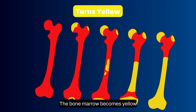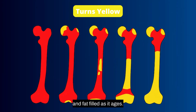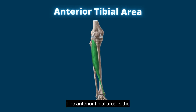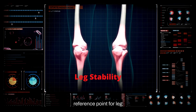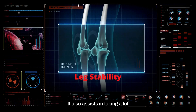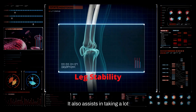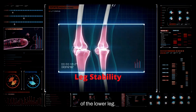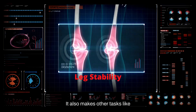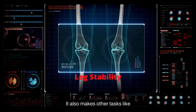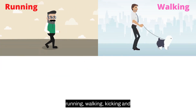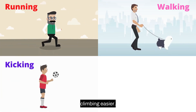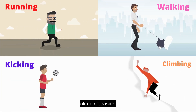The bone marrow becomes yellow and fat-filled as it ages. The anterior tibial area is the reference point for leg stability. It also assists in supporting much of the lower leg, and makes other tasks like running, walking, kicking, and climbing easier.